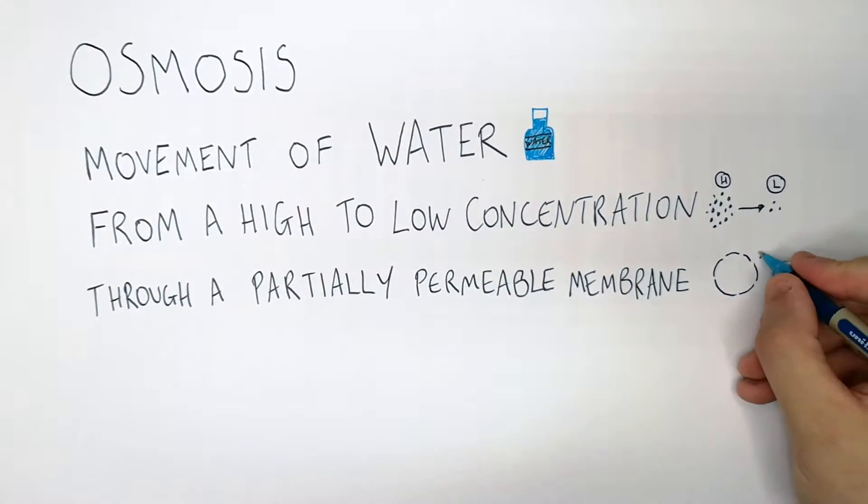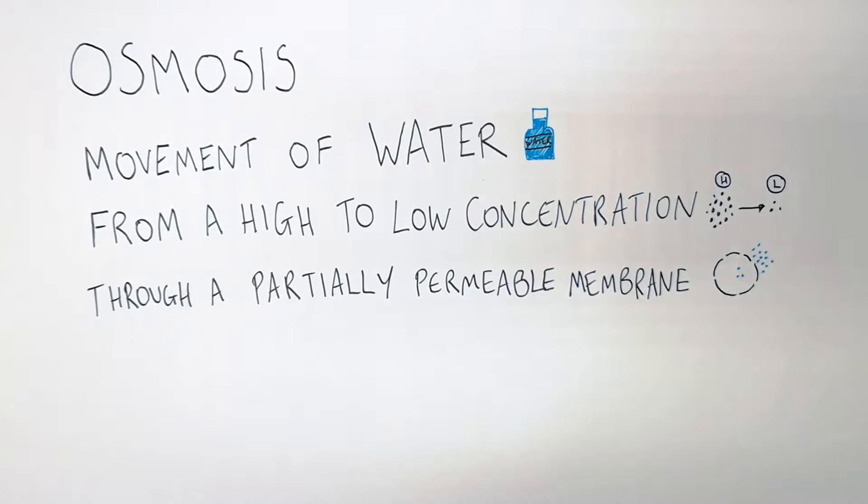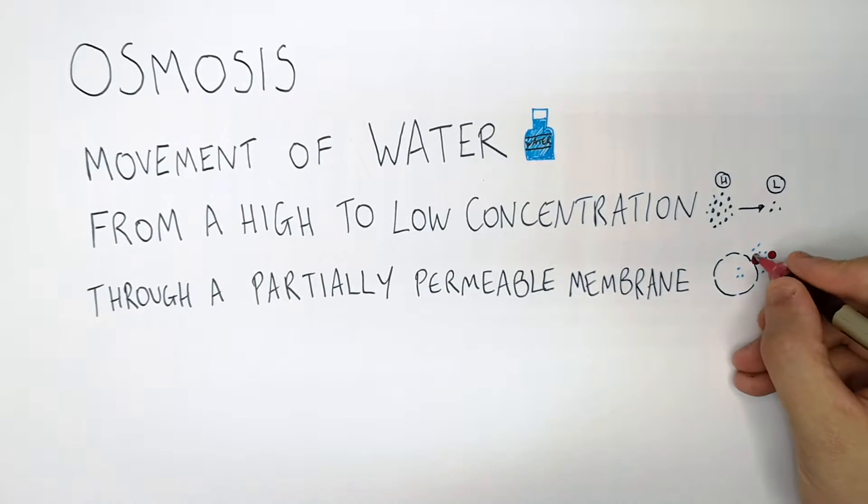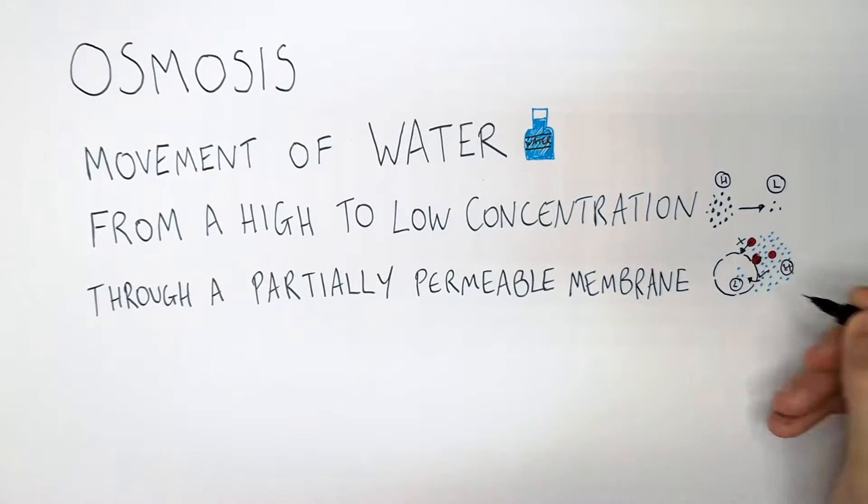Partially permeable means some things can go through it. So as you can see here, some molecules are small enough to go through the membrane, but some molecules are too big to go through the membrane. So these small molecules can go through, but the big ones can't. So it's a partially permeable membrane.